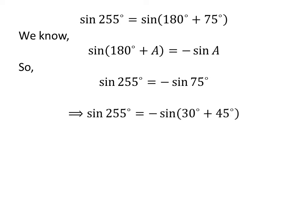Again, 75 degrees is equal to 30 degrees plus 45 degrees. So, sine of 255 degrees is equal to minus sine of 30 degrees plus 45 degrees.